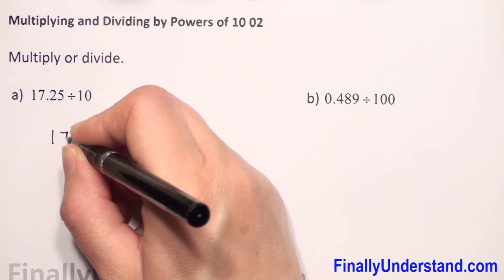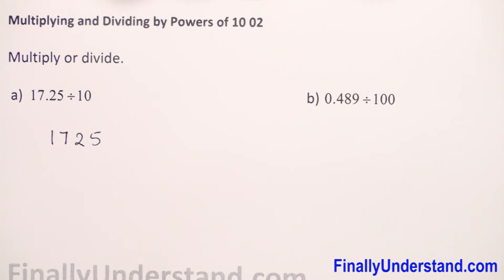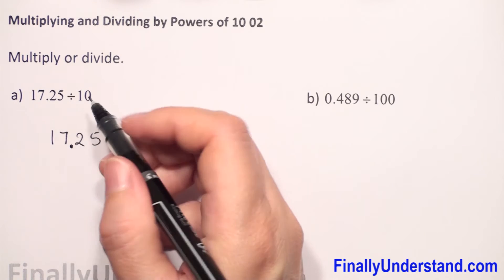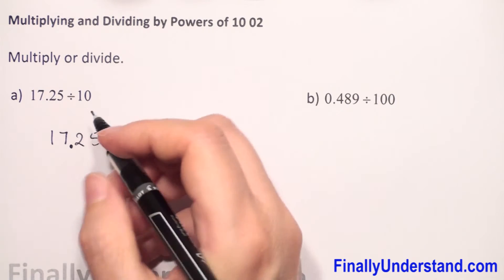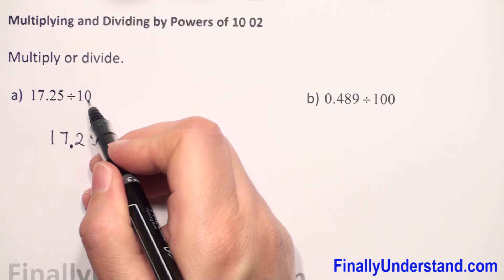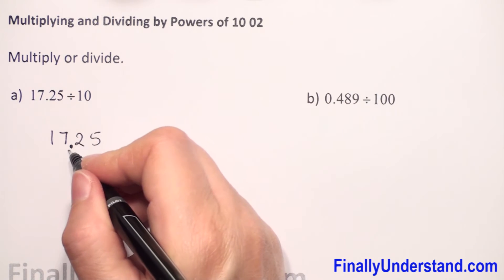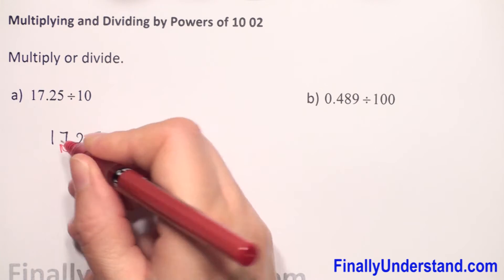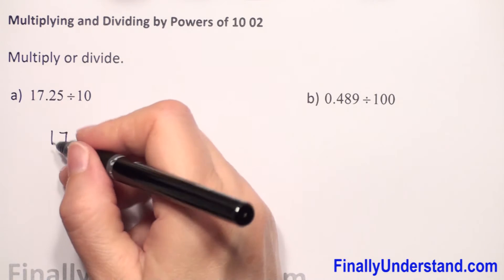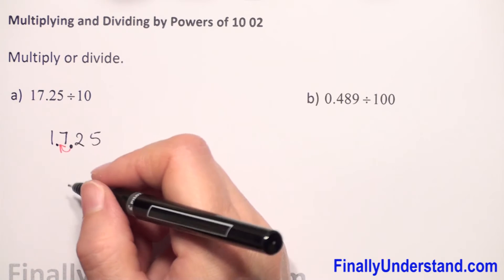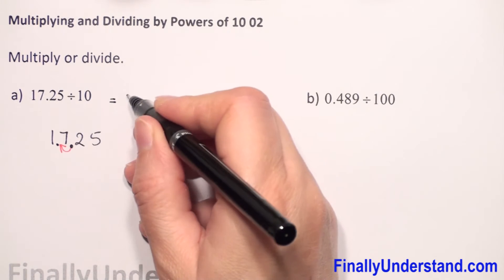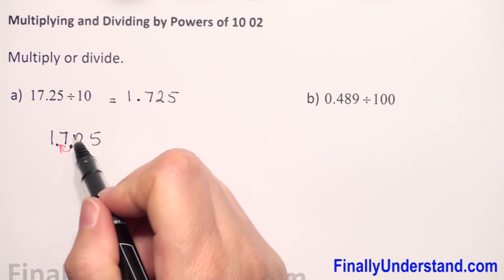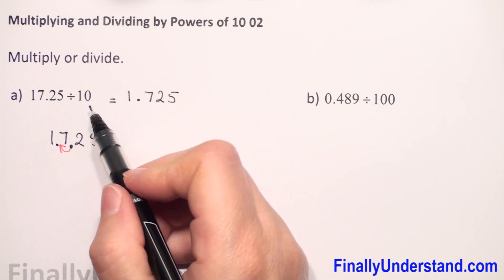Let me copy this number. We have here 1725. We have a decimal point between seven and two. Like I said, division, so we move to the left, and how many places? One only, because we have one zero. So we will go to the left one place, so the decimal point will be between one and seven now. So the solution will be 1.725.